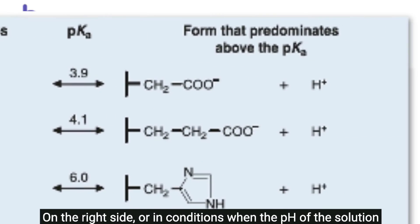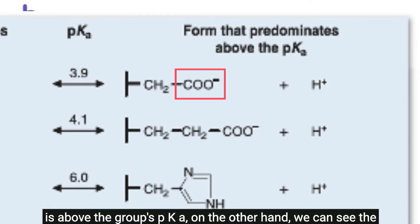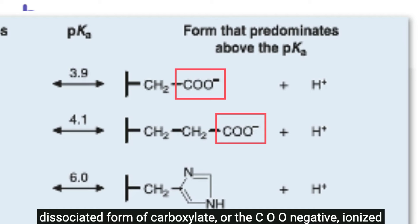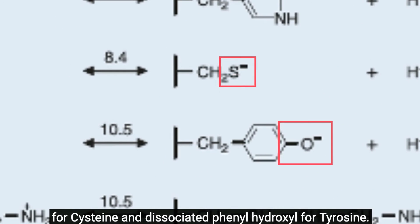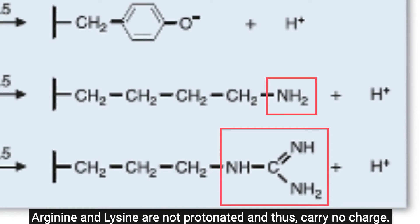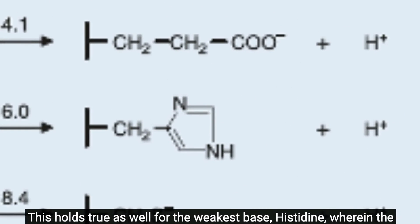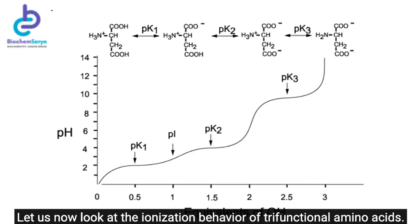On the right side, when the pH is above the group's pKa, we see the dissociated carboxylate (COO-negative) form for aspartate and glutamate, the dissociated sulfhydryl for cysteine, and the dissociated phenolic hydroxyl for tyrosine. The additional amino groups for arginine and lysine are not protonated and thus carry no charge. Similarly, for histidine — the weakest base — the imidazole group is not protonated and carries no positive charge.